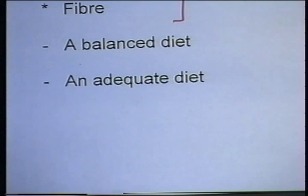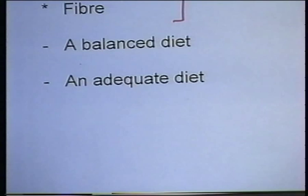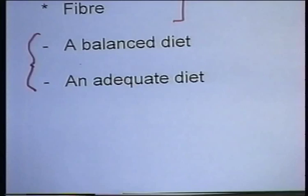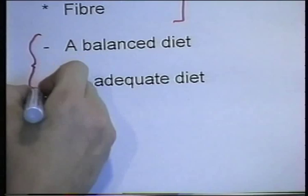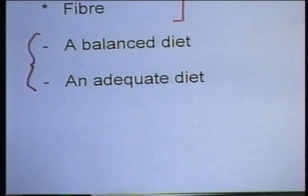In addition to being in the correct proportions, there must also be enough of the seven components of the diet. There's no point having exactly the right proportions of carbohydrates, proteins, fats, vitamins, minerals, water, and fiber if there's not enough of them. This gives us the idea of an adequate diet — not only must the diet be balanced, it should also be adequate to maintain health.